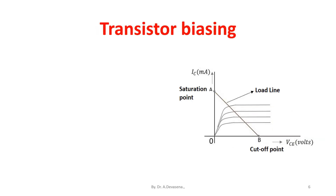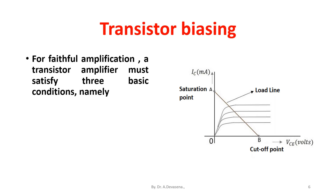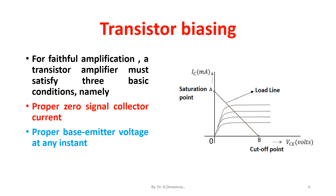For faithful amplification, a transistor amplifier must satisfy three basic conditions: proper zero signal collector current, proper base-emitter voltage at any instant, and proper collector-emitter voltage at any instant.